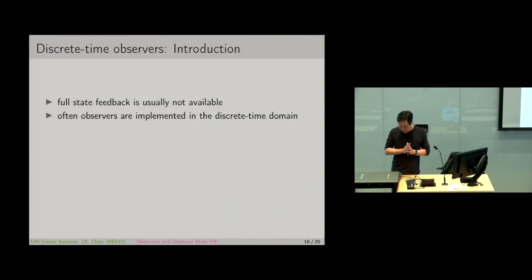Let's talk about observer design for discrete time systems. It's the same logic. The reason we want this kind of observer design is because full state feedback is not available and full state feedback is really powerful. Now, the second motivation is that usually observers are implemented in the discrete time domain. Why don't we just design everything from the discrete time domain?